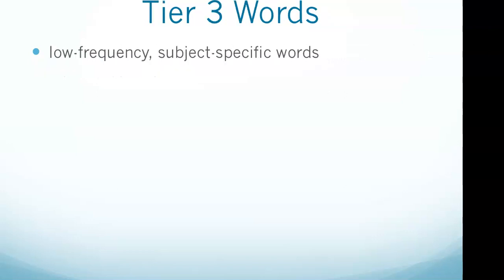Tier three words. Tier three words are commonly defined as low frequency, subject-specific words — mathematics, medical, legal — words that all relate to specific subjects or professions. So thinking again, tier three words are going to relate to either a subject or a profession.